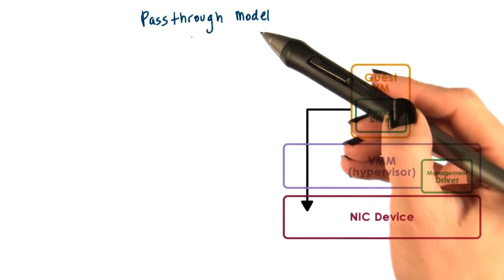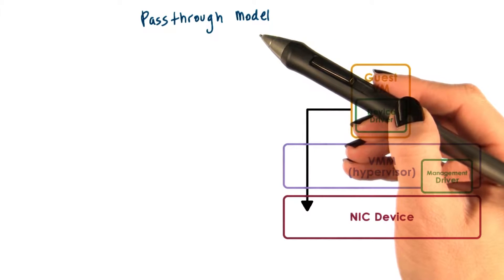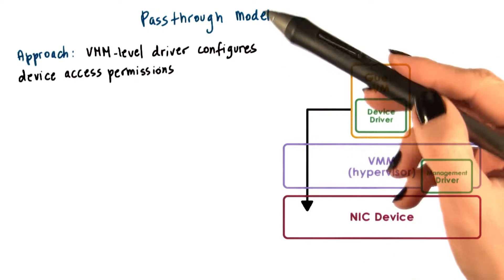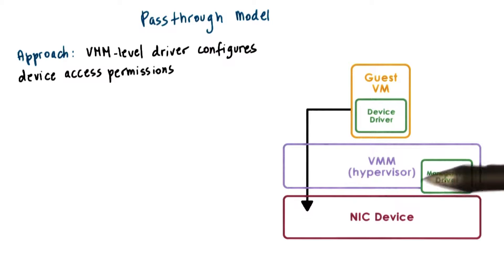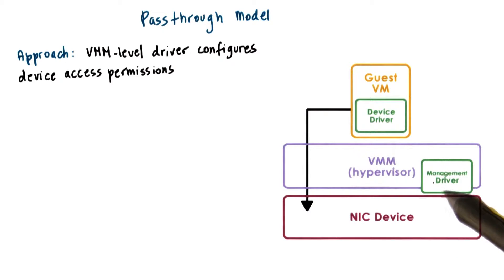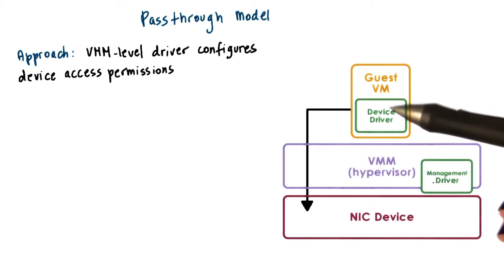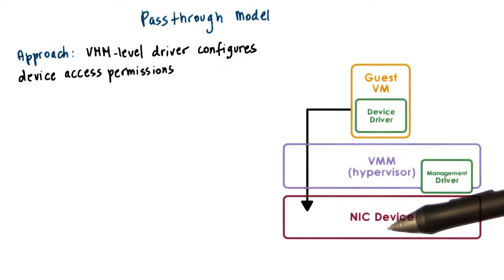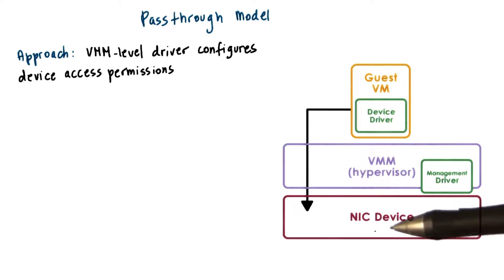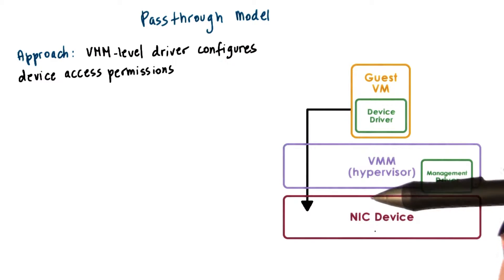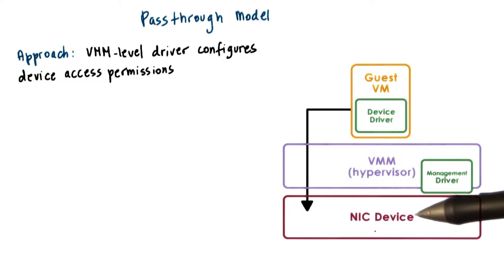One model is the so-called pass-through model. The way the pass-through model works is that the VMM level driver is responsible for configuring the access permissions for a device. For instance, it will allow a guest VM to have access to the memory where the control registers for the device are mapped.